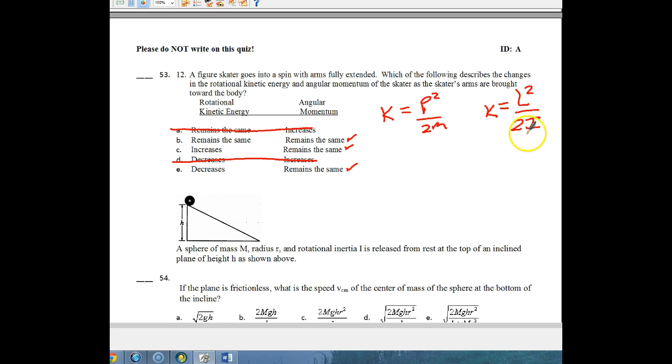So as the skater's arms come in, this I value, which depends on the square of the average distance of the mass from the axis, gets smaller. Since the kinetic energy depends directly on the square of the angular momentum, and inversely on the moment of inertia, and since I is decreasing, then K would have to go up. Also there's got to be work done to draw the arms in, and this work goes into increased kinetic energy. So this is the correct answer. And if you think about it, they're going faster. If they're going faster, you've got to increase your rotational kinetic energy anyway. So the answer should be C.